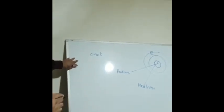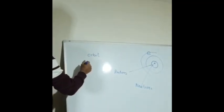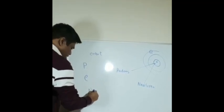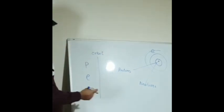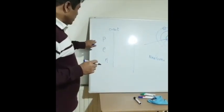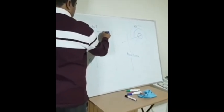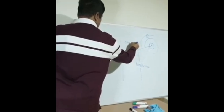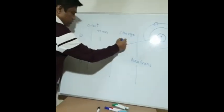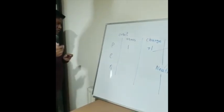Now let's learn the masses and charges of the fundamental particles — proton, electron, and neutron. The mass of the proton is 1 and the charge of the proton is +1. Remember, mass is always a positive quantity — some students say positive and negative for mass, which is wrong.